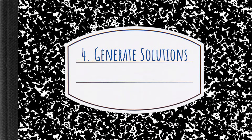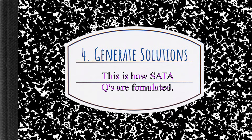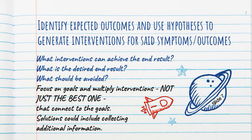The fourth step is to generate solutions. This is how the NCLEX test writers formulate SATA questions — your select-all-that-apply — because they have multiple solutions. In generating solutions, you want to identify expected outcomes and use hypotheses to generate interventions for symptoms or the outcomes. Think to yourself: what is the desired result? What interventions can achieve the end result? And what should be avoided? You want to focus on goals and multiple interventions that connect to the goals. Potential solutions could include collecting additional information.